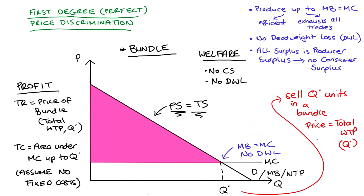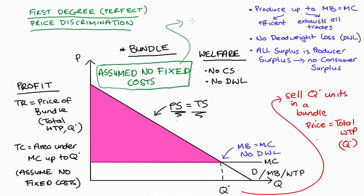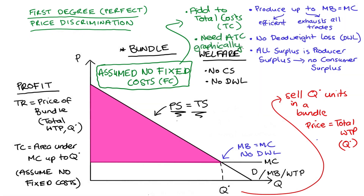Lastly, throughout the video I've assumed no fixed costs, which made it easy to find total costs by summing up under the marginal cost curve for each unit, and made finding profit easy graphically. If your problem has a fixed cost component, you need to add it algebraically to the total cost function. To see profit graphically, you will need an average total cost curve as well — just following the standard way of showing profit graphically by finding average total cost. I'll try to do some practice problems demonstrating these variations, and also examples where marginal cost is increasing.